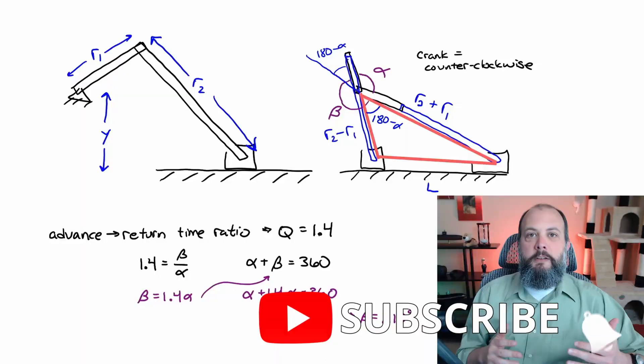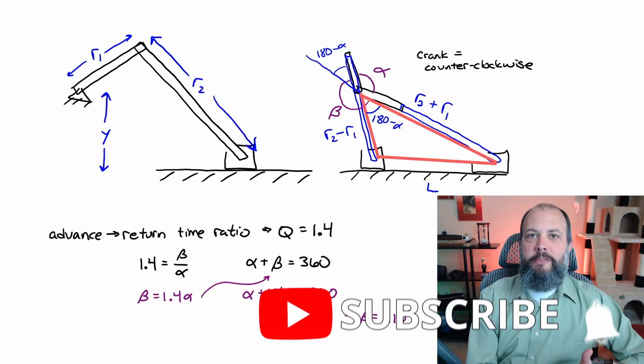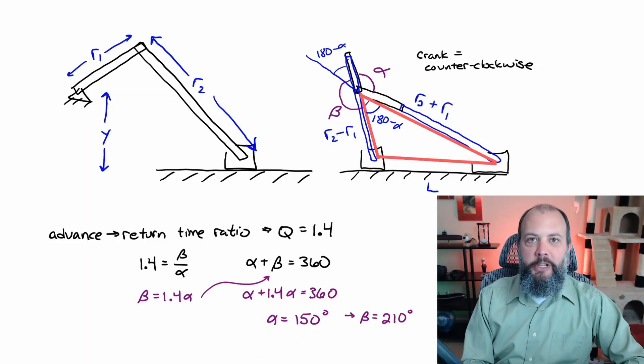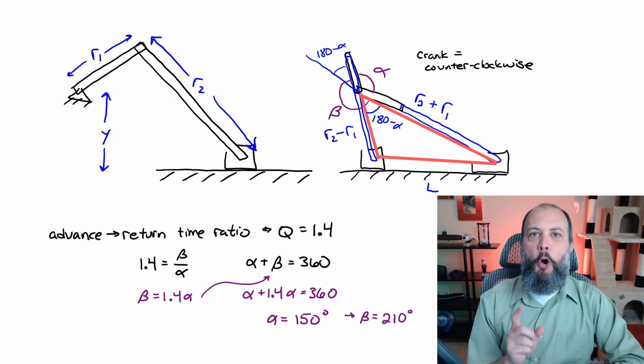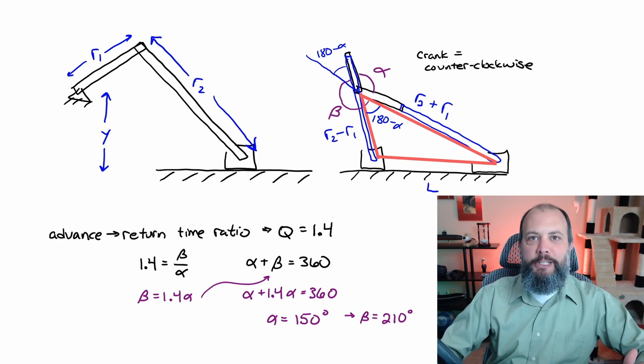So how would this have been different if instead of choosing 2 inches at the beginning I had chosen a longer length? First I'll check the time ratio alpha and beta. You can see here that none of the lengths have anything to do with the toggle positions. The forward most and back most toggle positions for the slider are only dependent on the time ratio. So alpha and beta would not change.